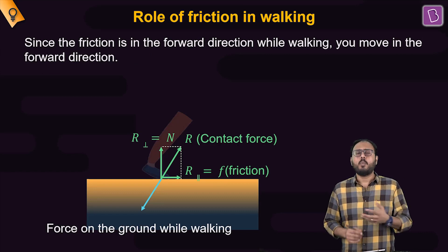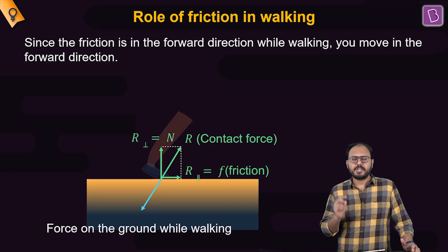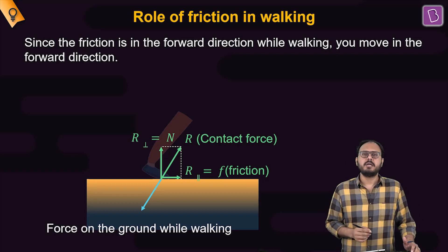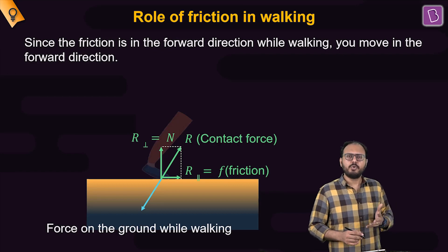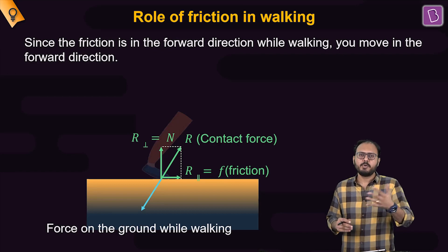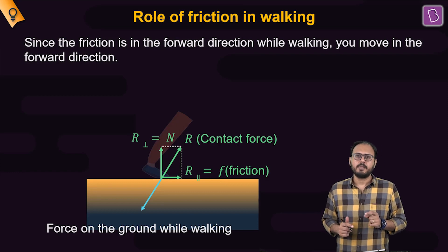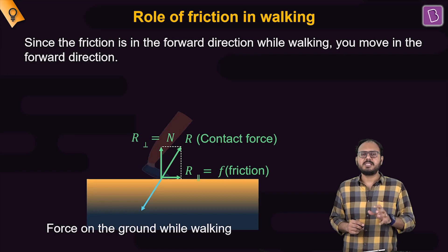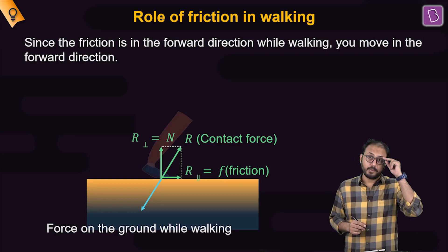So what happens in icy surfaces, slippery surfaces? The friction coefficient is so small that the friction value is decreasing. That's one of the reasons. Of course, when you take a bigger stride, have you noticed? On slippery surface, the only way to actually be stable and still be able to move forward is to take baby steps. You don't take a big stride. Why is that? I will explain that later. Think about it. Why do you take small steps, baby steps on an icy or slippery surface? Think about it.